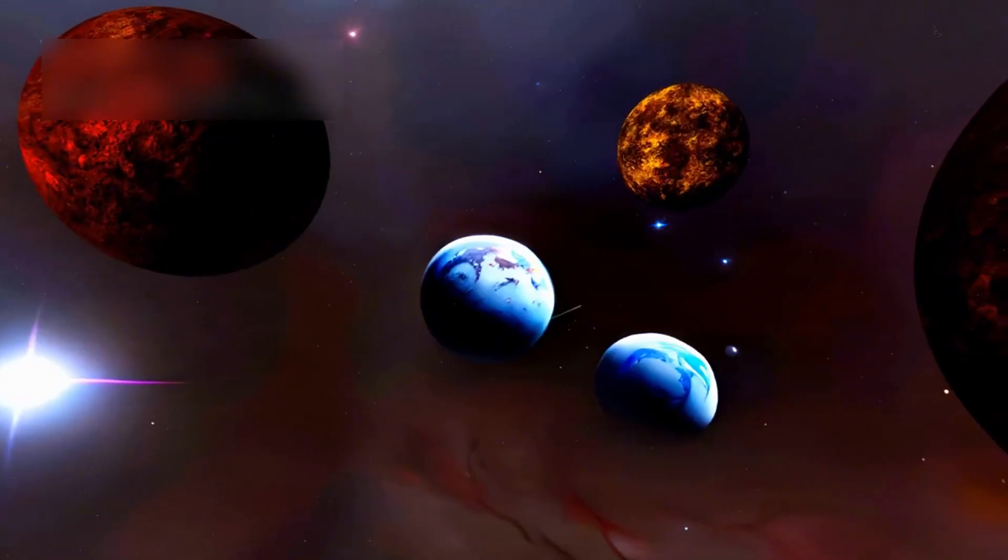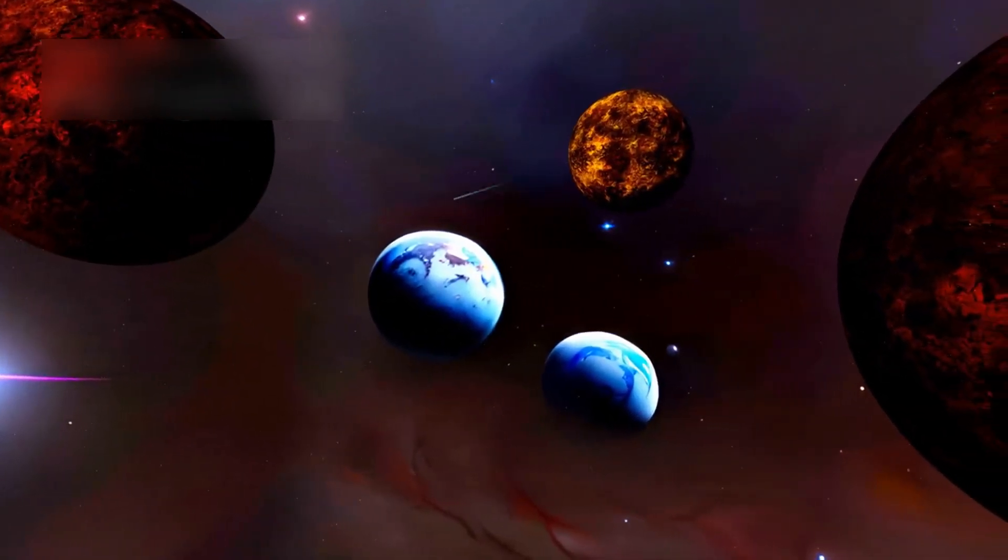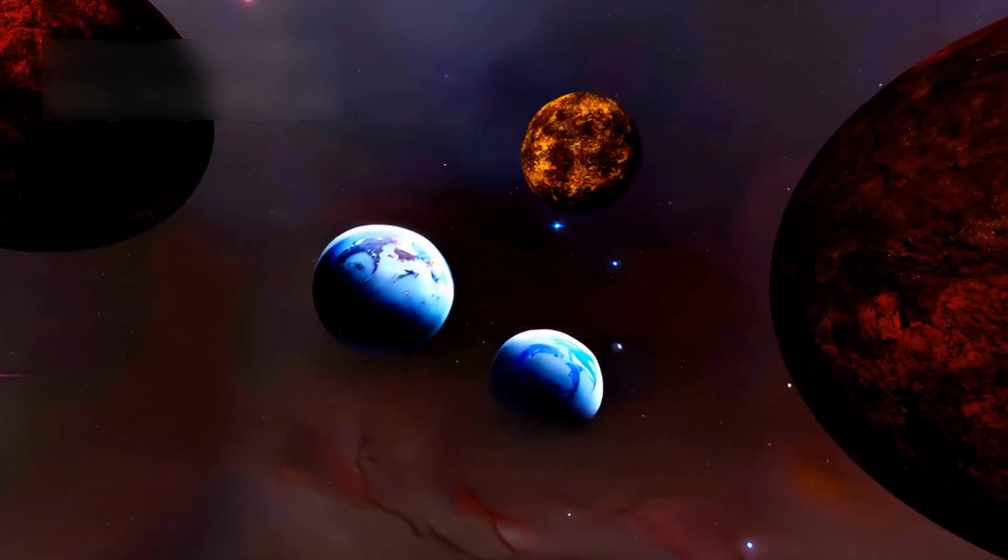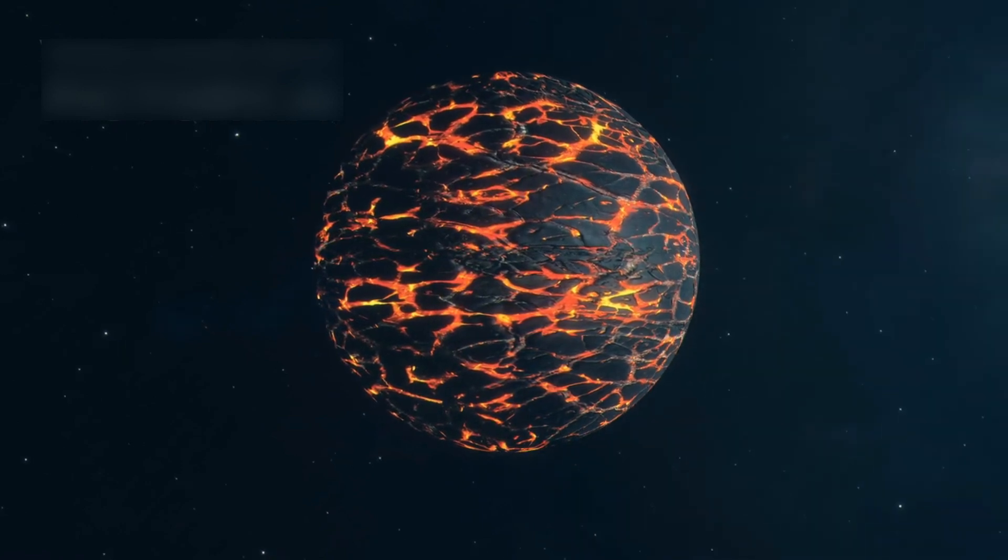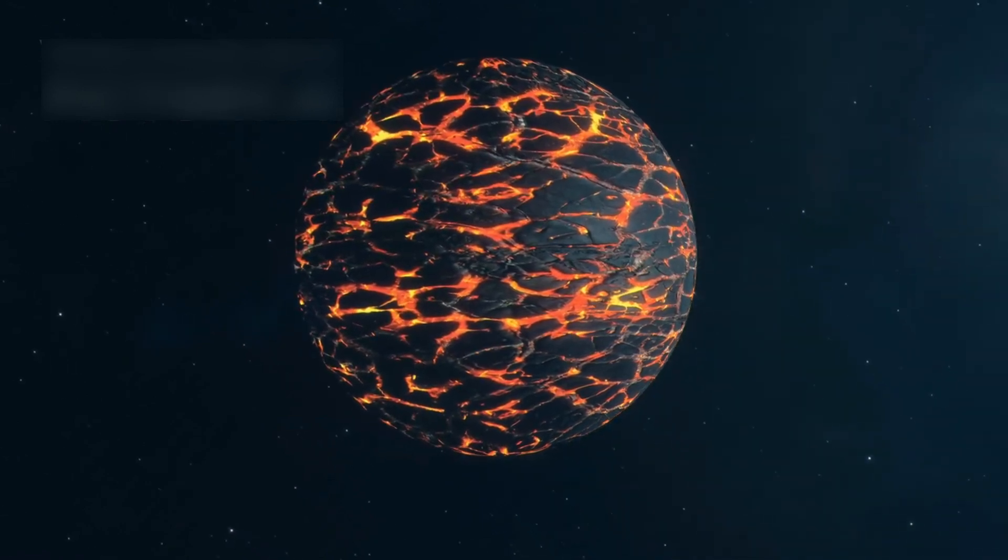These disks of gas and dust spin around young stars, where planets slowly begin to form. Some have gaps made by new planets, showing planet formation in the galaxy. Bill Nye believes this could explain how Earth-like worlds are born, giving clues about our solar system.